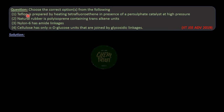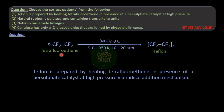Option one is about the preparation of Teflon. Teflon is formed by passing tetrafluoroethene into water containing ammonium persulfate as a radical initiator at 310 to 350 Kelvin and at a pressure of 10 to 20 atmospheres. Ammonium persulfate forms radicals which break the double bond of tetrafluoroethene and proceed the reaction by a free radical mechanism. So option one, which states that Teflon is prepared by heating tetrafluoroethene in presence of a persulfate catalyst at high pressure, is correct.